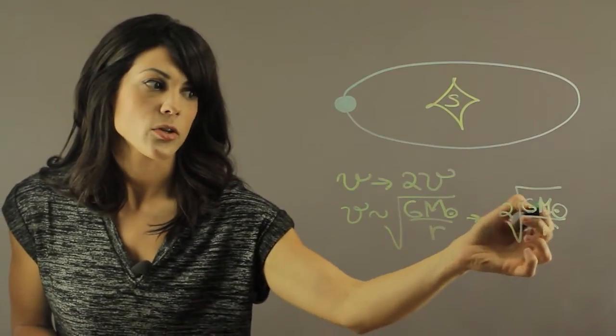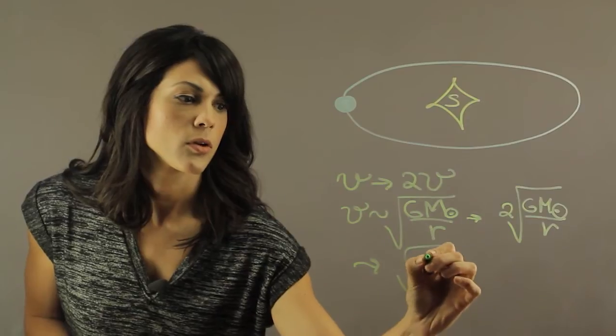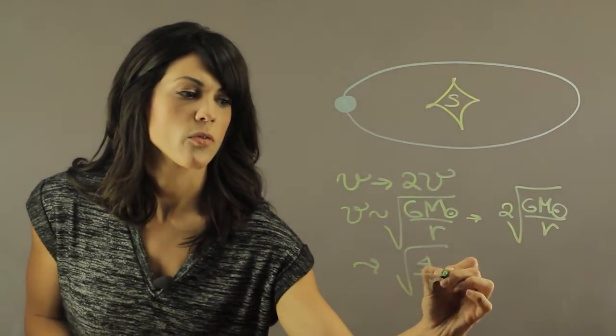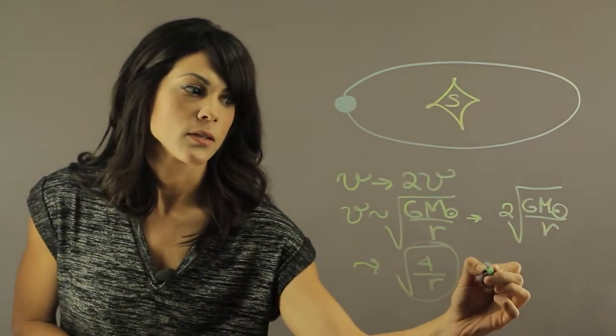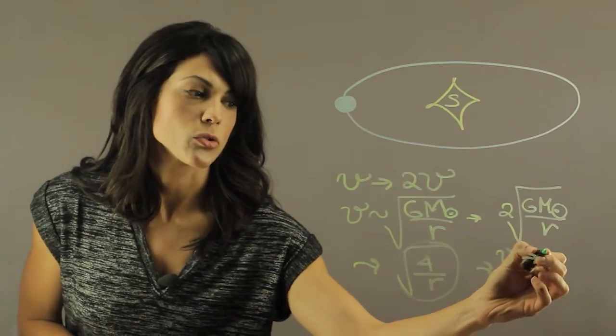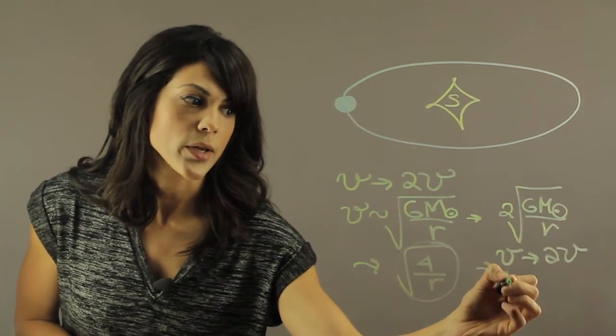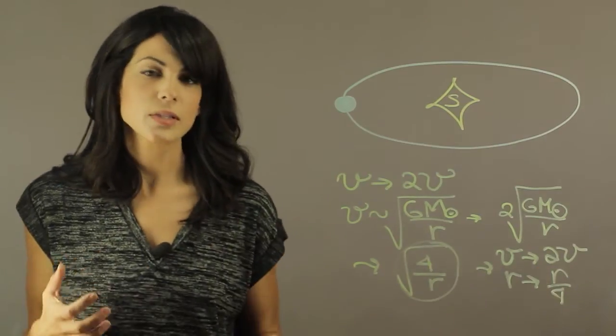So if we bring this factor into the square root, we will have √(4GM/r). So let's just focus on this number. That means that the radius decreased by 4. So as the velocity goes to twice the velocity, the radius goes to the radius divided by 4. So it decreases by one fourth.